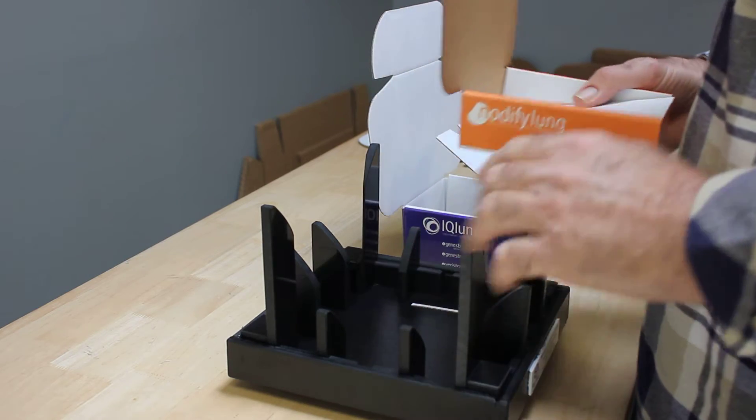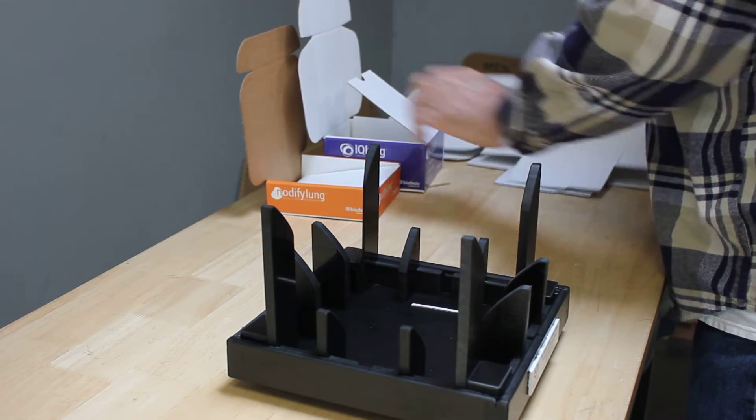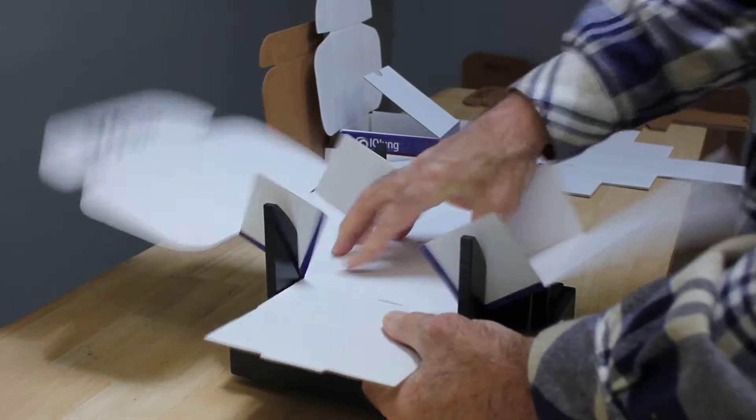So we have one fixture that's going to fold two different boxes, very nice. And again, let's grab our box. Two-part process: we're going to set it into the fixture, press it down, make a couple of folds.